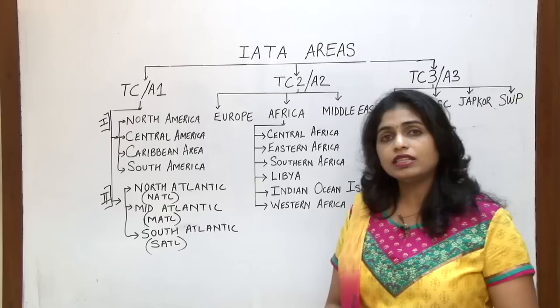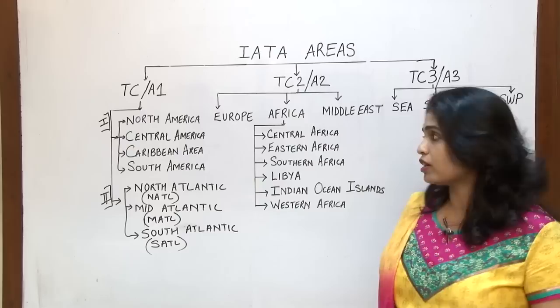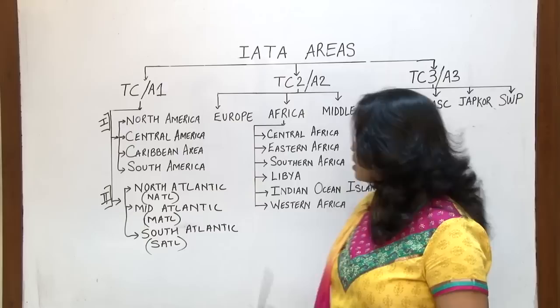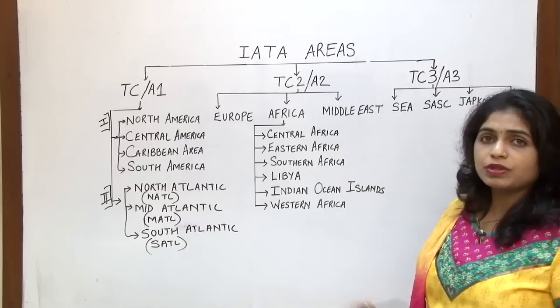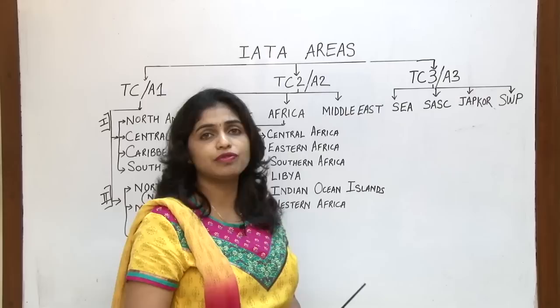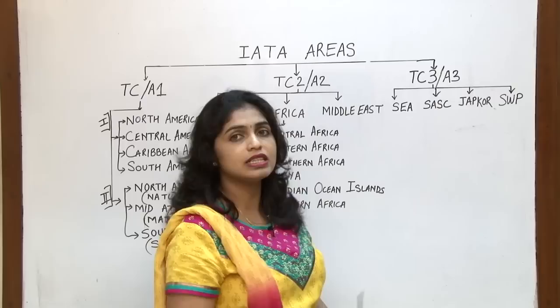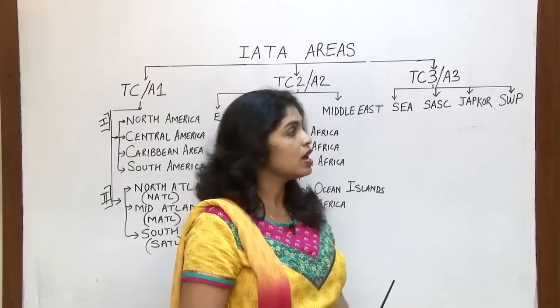To remember the six Africa sub areas correctly, just remember which direction is not there — we have East, South, and West, but we do not have North. Traffic conference area 3 is further divided into four sub areas: South East Asia, South Asian subcontinent, JAPCOR, and Southwest Pacific.